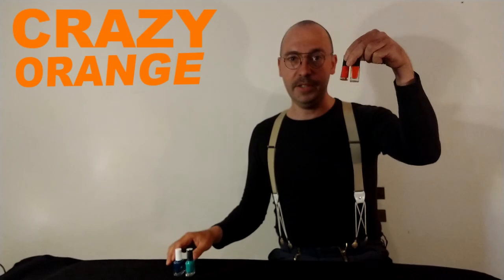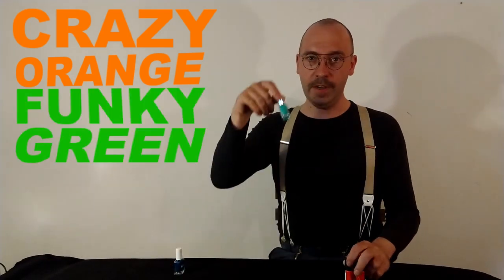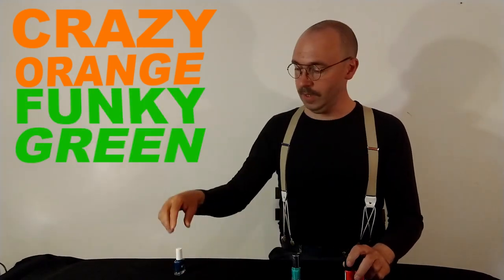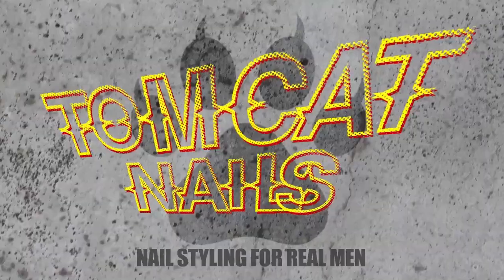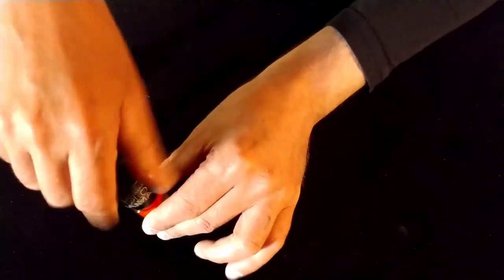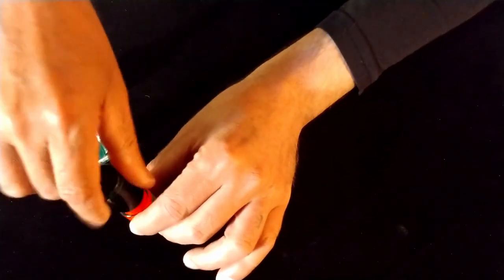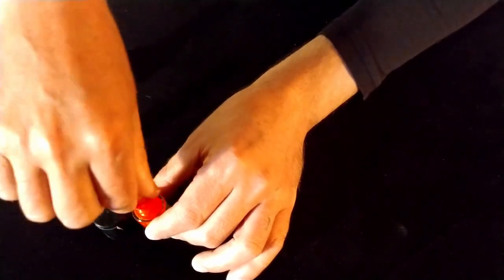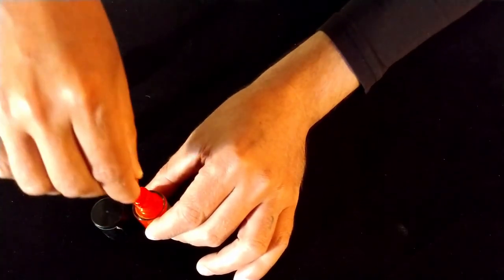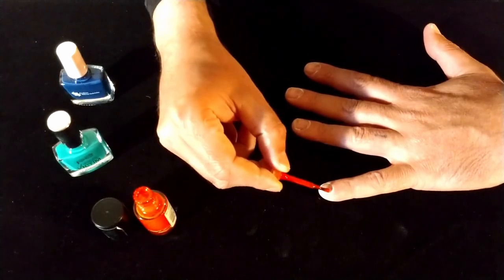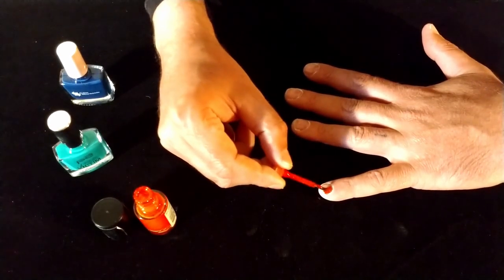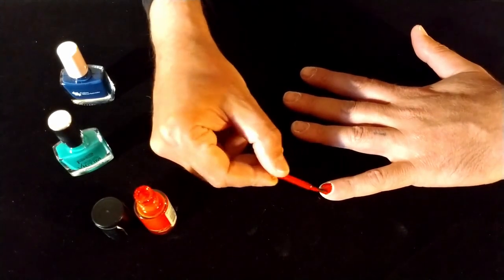We have batshit crazy orange, funky green and an insane blue. We will start the batshit crazy corona style with the batshit crazy orange. This orange has a wavelength of roughly 630 to 660 nanometers.